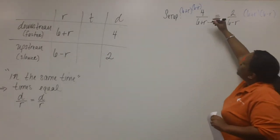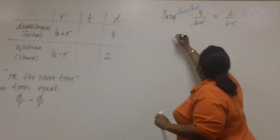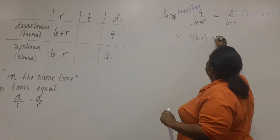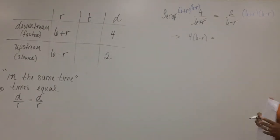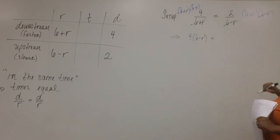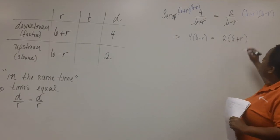Notice here that the six plus R's cancel, leaving us with four times six minus R. Here, six minus R cancels, leaving us with two times six plus R.